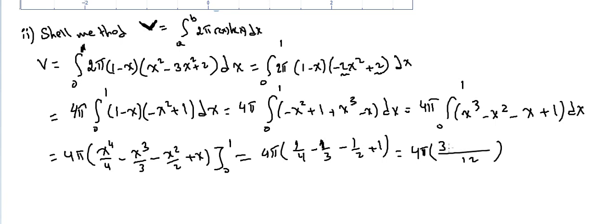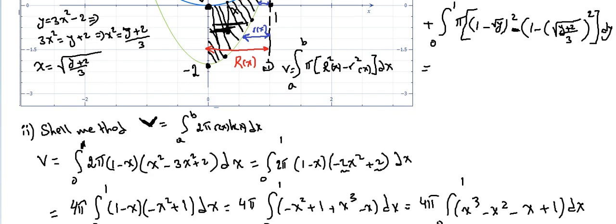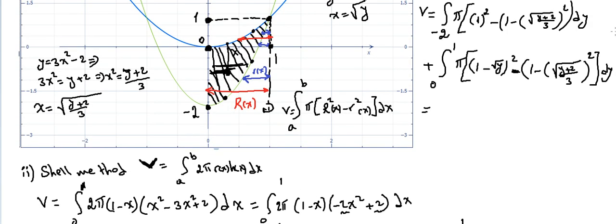With common denominator 12, it's 3 minus 4 minus 6 plus 12, which gives 12 minus 6 minus 4 = 2, so we get 5 over 12. We can simplify 4 and 12, so the answer is 5π/3.